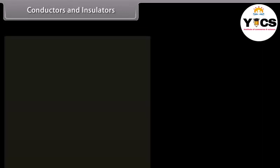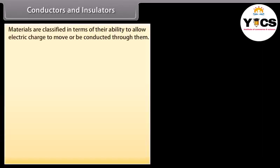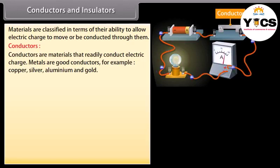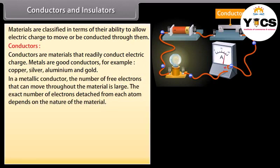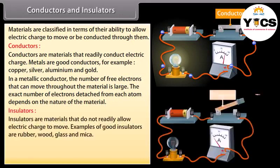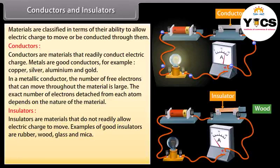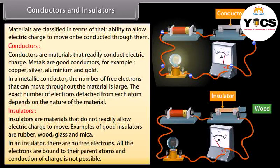Conductors and insulators: Materials are classified in terms of their ability to allow electric charge to move through them. Conductors are materials that readily conduct electric charge; metals are good conductors — for example, copper, silver, aluminum, and gold. In a metallic conductor, the number of free electrons is large. Insulators are materials that do not readily allow electric charge to move; examples include rubber, wood, glass, and mica. In an insulator, all electrons are bound to their parent atoms and conduction of charge is not possible.